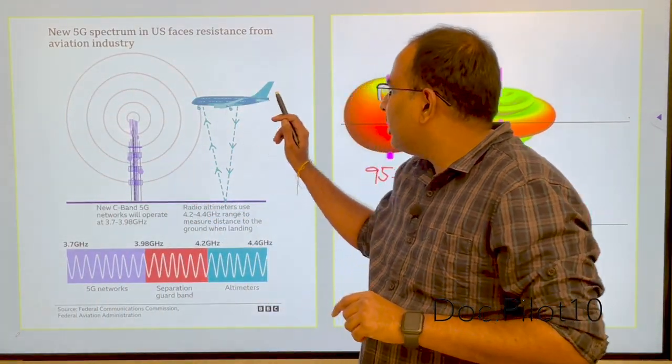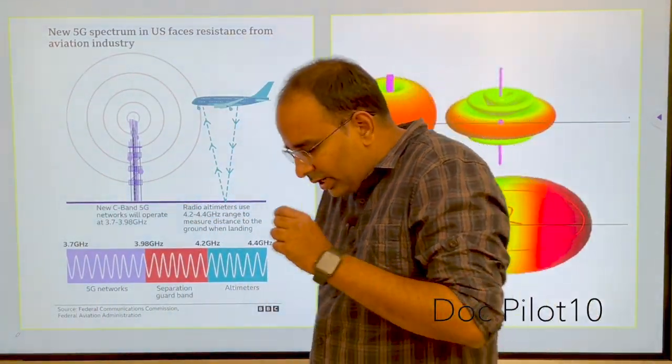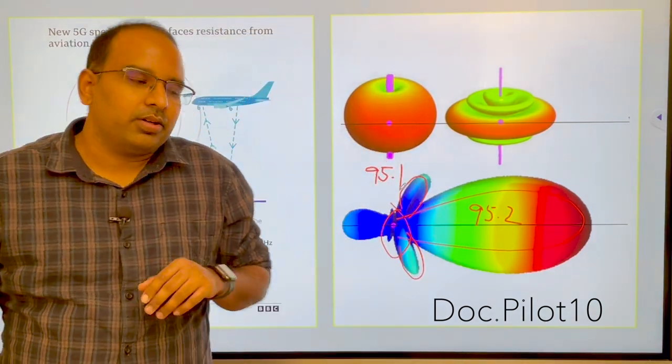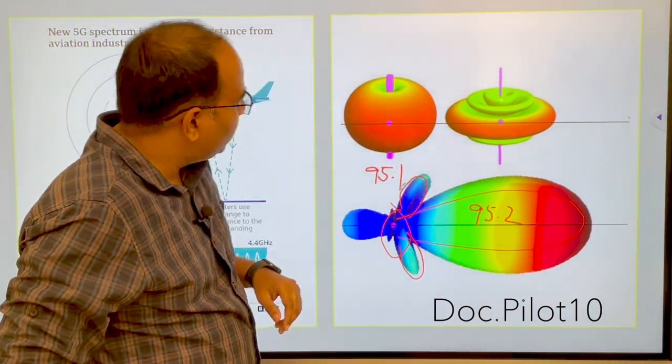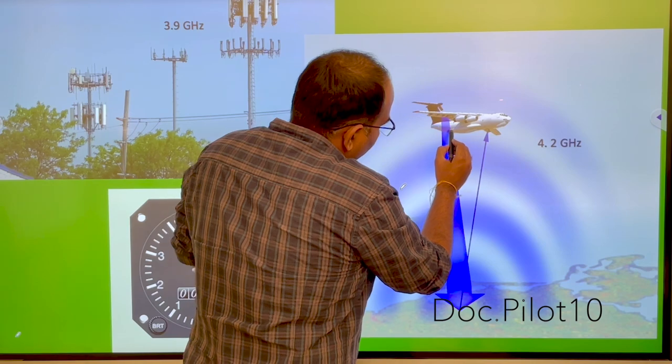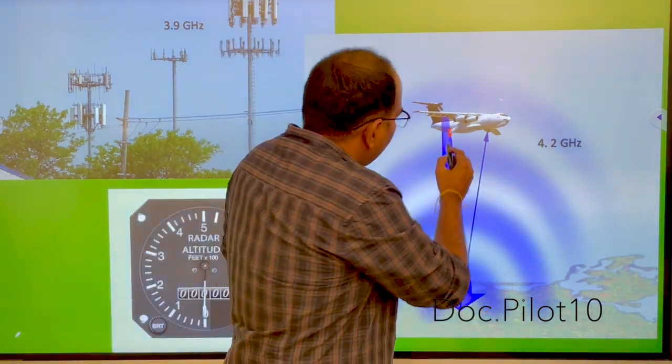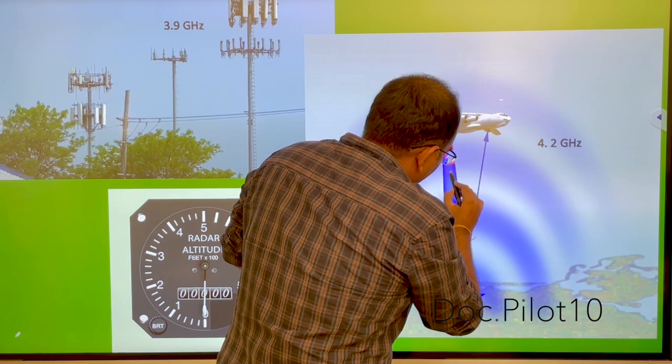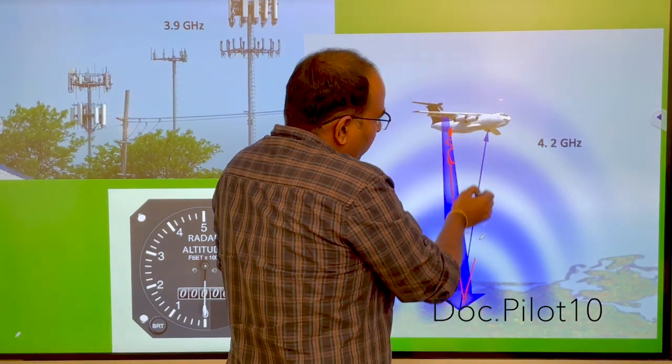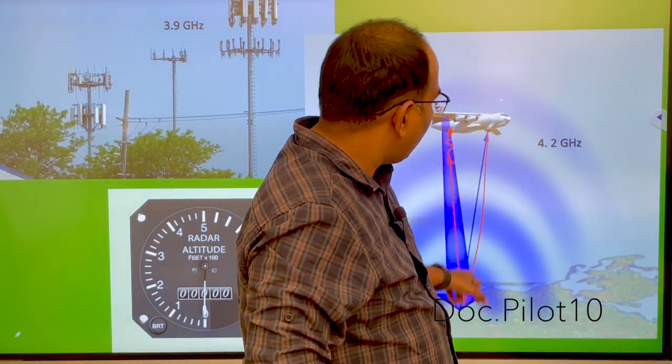Now let's understand the problem with 5G and our aircraft. Our aircraft has one instrument called radio altimeter. So what radio altimeter does is, it has an antenna at the bottom of the aircraft. While coming to land, radio altimeter is used just below 200 feet or when you want to land the aircraft. Now it will send a wave to the ground. That wave will bounce off from the ground and the time taken for the wave to travel is calculated.